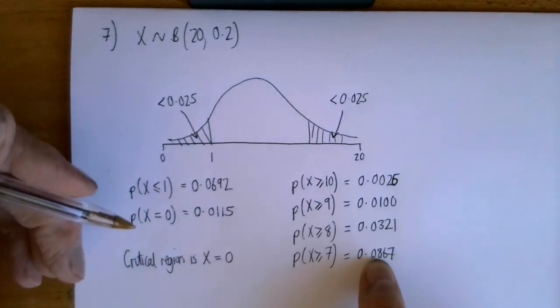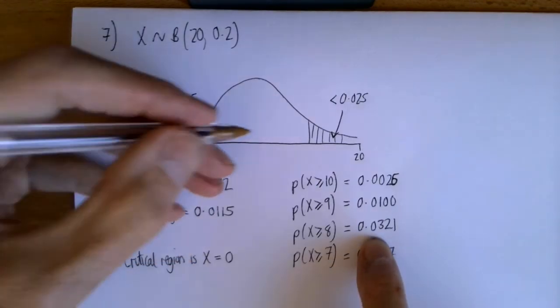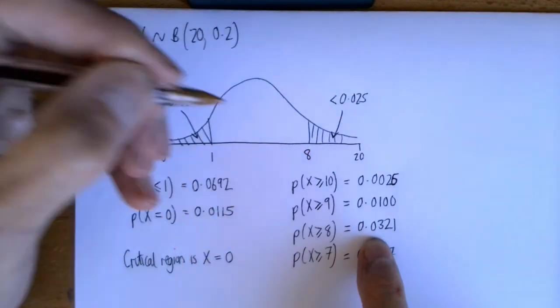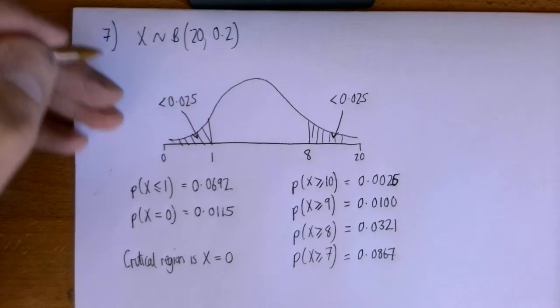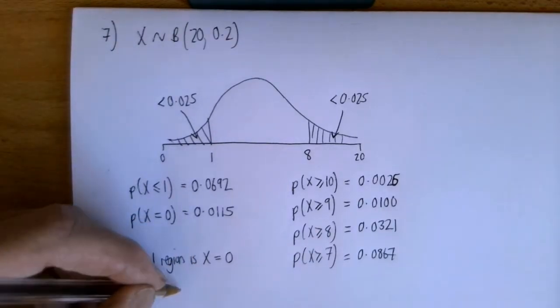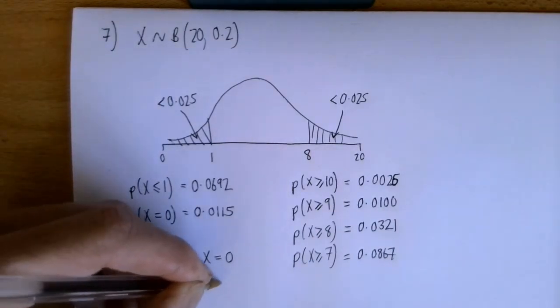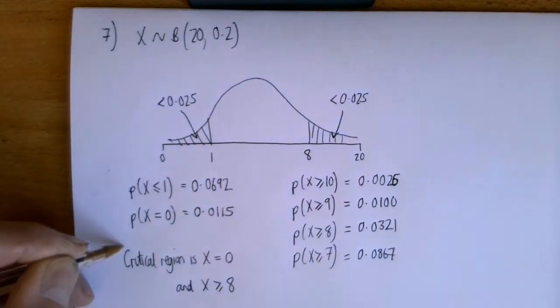which is closest to 0.025, it's that one. So in this question, the critical value is 8. So as well as X = 0, we've got X ≥ 8. So that's the answer to the critical region.